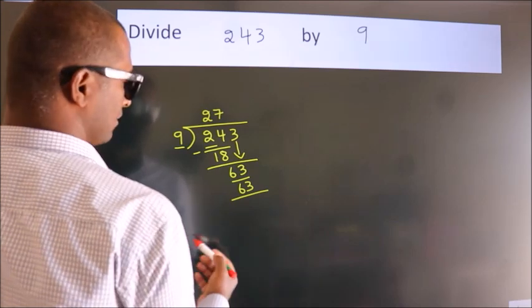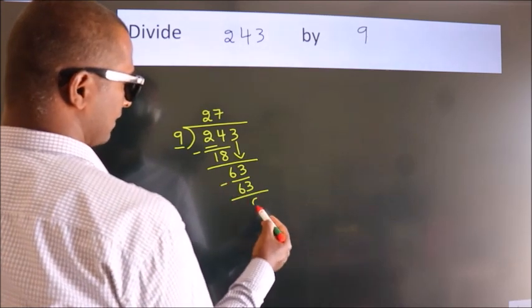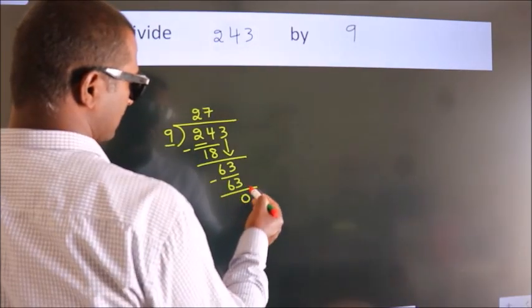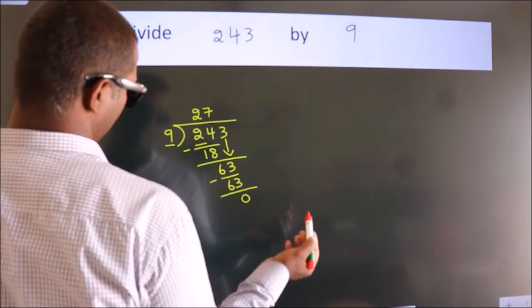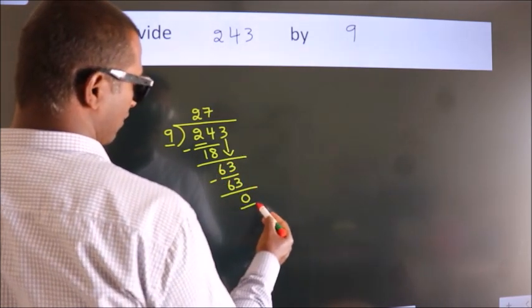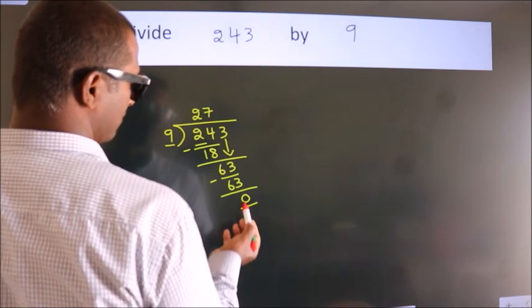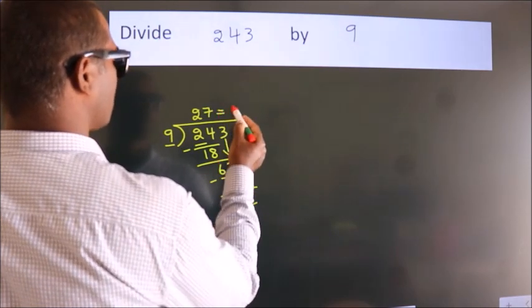Now, we subtract. We get 0. After this, no more numbers to bring it down. And we got remainder 0. So, this is our quotient.